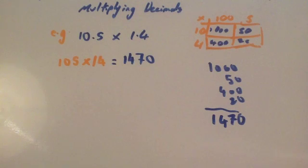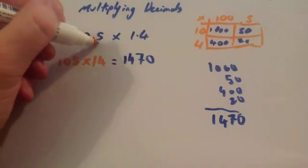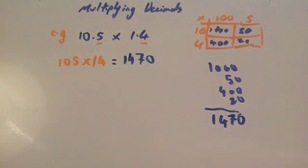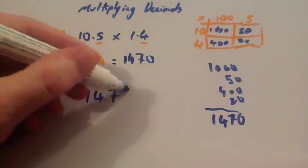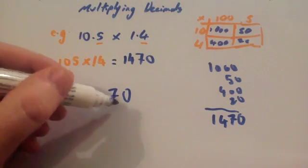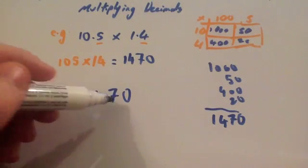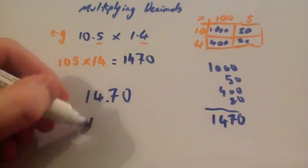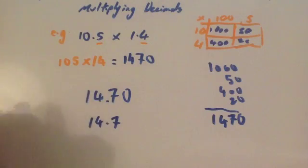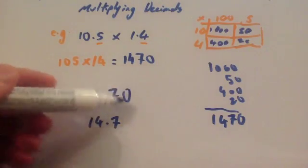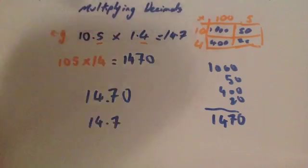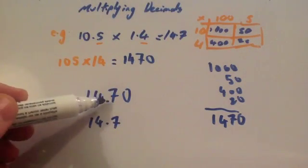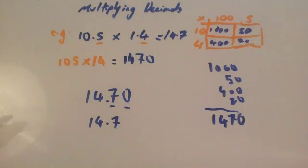We've done step one. Now step two: count the number of digits after the decimal points in the question. In the question we've got 2 digits after the decimal point. Therefore we need to place the decimal point in 1,470 so that there are 2 digits after it. Placing it here gives 14.70, and since this ends in a zero our answer is simply 14.7. Note that you still consider the zero when deciding where to put the decimal point, so you still have 2 digits after the decimal point. The answer is 14.7.